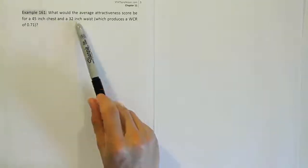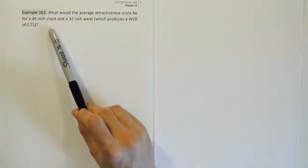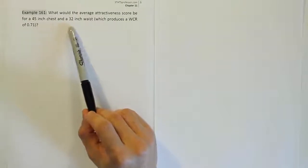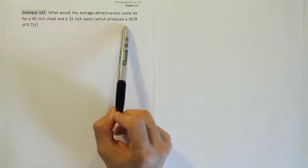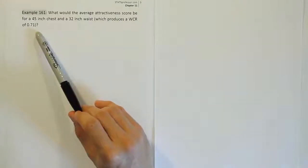Example 161. What would the average attractiveness score be for a 45-inch chest and a 32-inch waist, which produces a waist-chest ratio of 0.71?